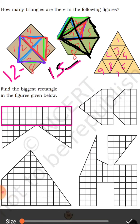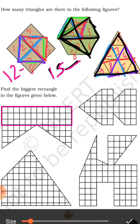Aap isme se badi triangle dhundenge. After 9, this triangle is 10. Now this triangle is 11. And this is 12. And if we look at the same thing, ek aur badi si triangle ban rahi hai — yeh outer wali, jo sab se badi hai. So the total number of triangles is 13. Kyunki aap ke paas ek sab se badi hai, 9 sab se choti, aur 3 medium size ki hain.